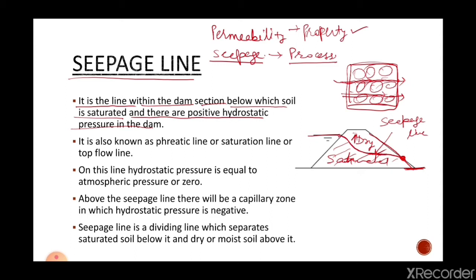Along the seepage line, the pressure is atmospheric. There is positive hydrostatic pressure below this seepage line. Above the seepage line, there is a capillary zone, and in this capillary zone the hydrostatic pressure is negative. This seepage line is also known as the phreatic line, or saturation line, or top flow line.